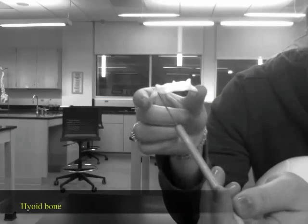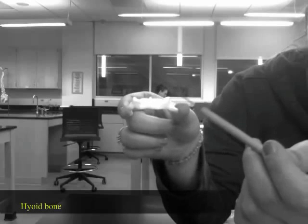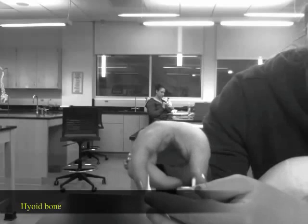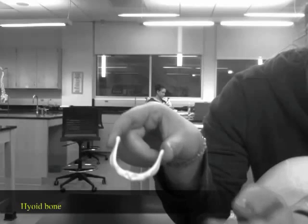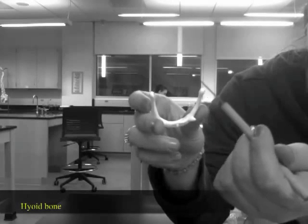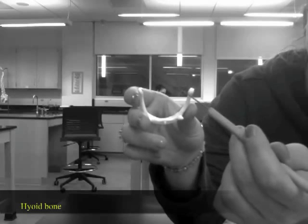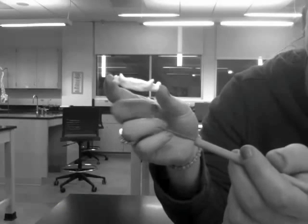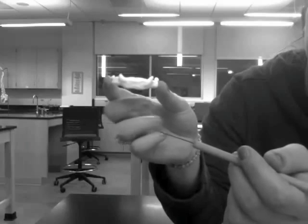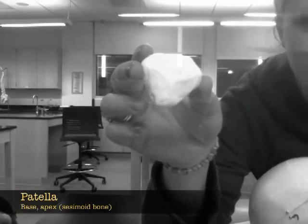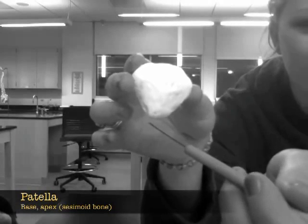Body in the front part. Lesser wings, yeah, lesser horns, the little ones. And then the greater horns are going to be these big ones. That's the anterior view of it. This is a sesamoid bone, anterior view, base, apex, that's all you need to know.